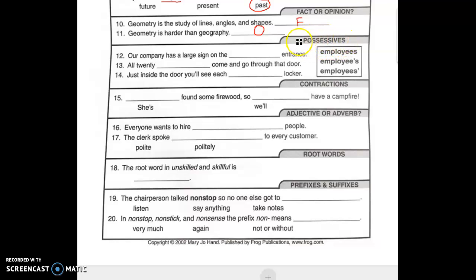This section is about possessive nouns. This first word, employees, simply means more than one employee or worker. The second example has an apostrophe here. And it shows that the employee owns something. One employee owns something. The third example with the S on the end before the apostrophe means that there is a lot of employees all owning something.